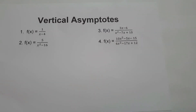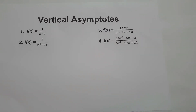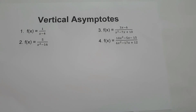Welcome to another video. In this video, we are going to talk about how to find the vertical asymptote of a rational function. What is the rule in finding the vertical asymptote? To find the vertical asymptote, we just simply equate the denominator to zero. It is the value of x that will make the function undefined or meaningless.